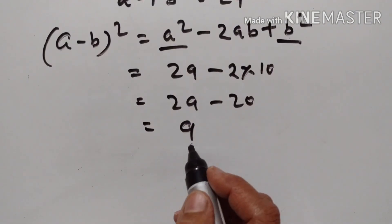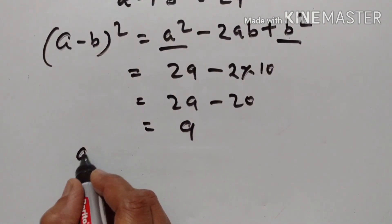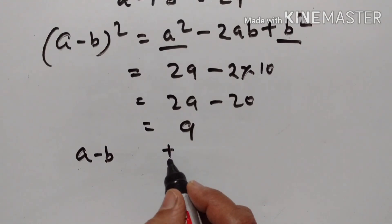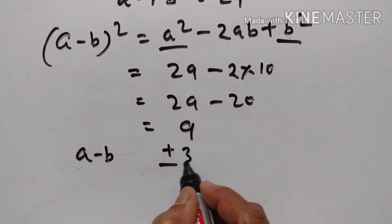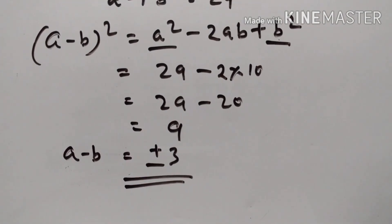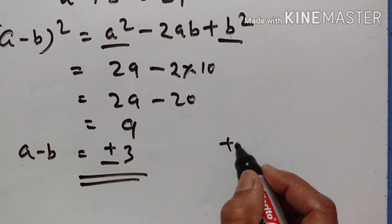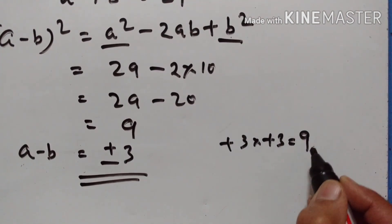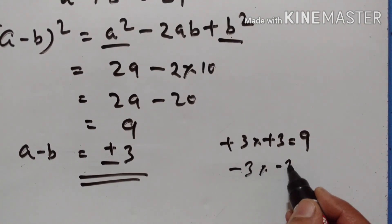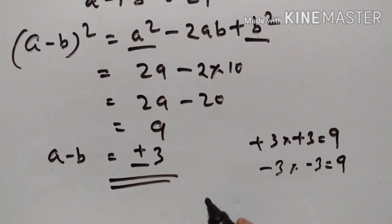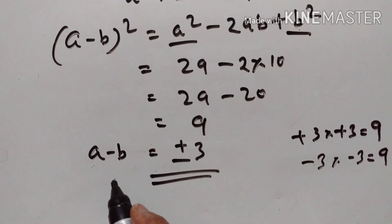Taking the square root on both sides: A minus B = √9 = ±3. Why plus or minus? Because (+3)(+3) = 9 and (−3)(−3) = +9. So A minus B is equal to plus or minus 3.